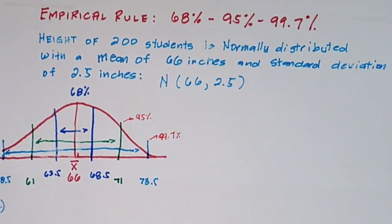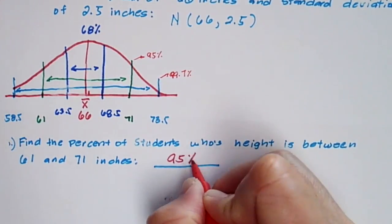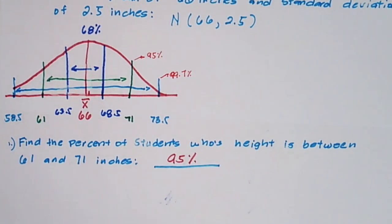So if we're going to find the percent of students whose height is between 61 and 71 inches, it falls within two standard deviation away from the mean, so the answer is 95%.